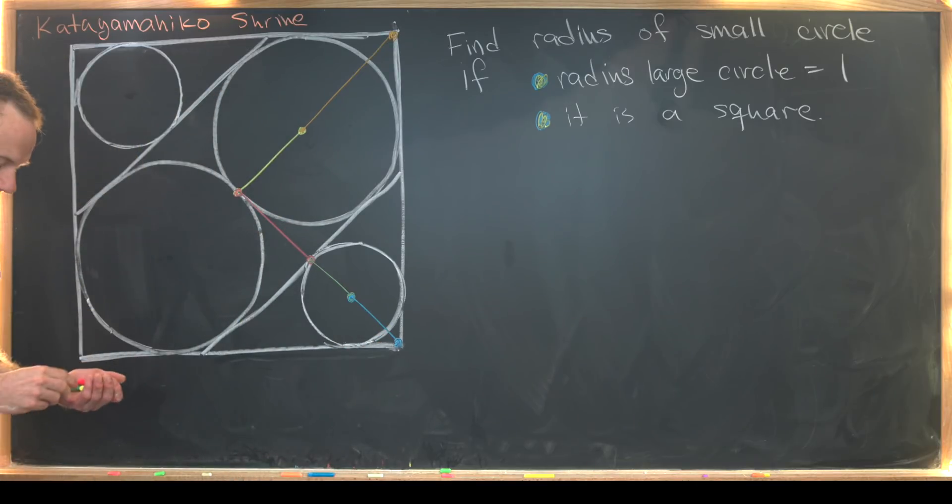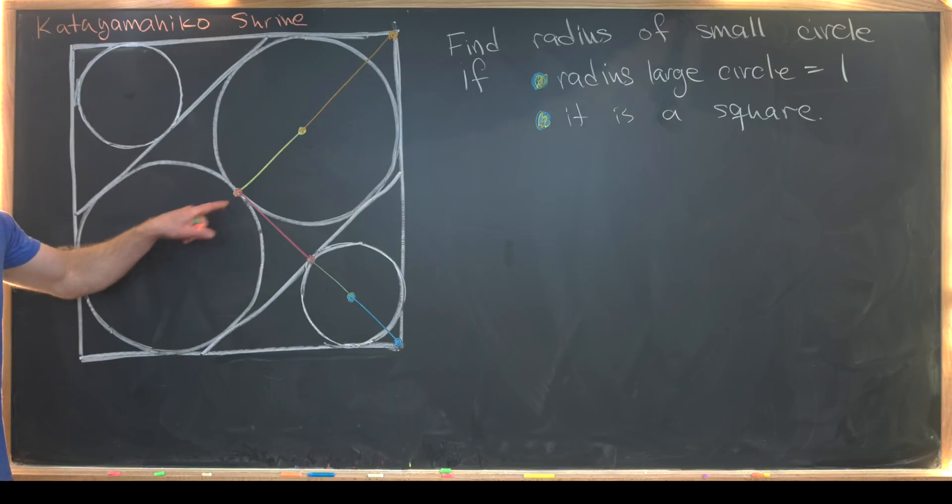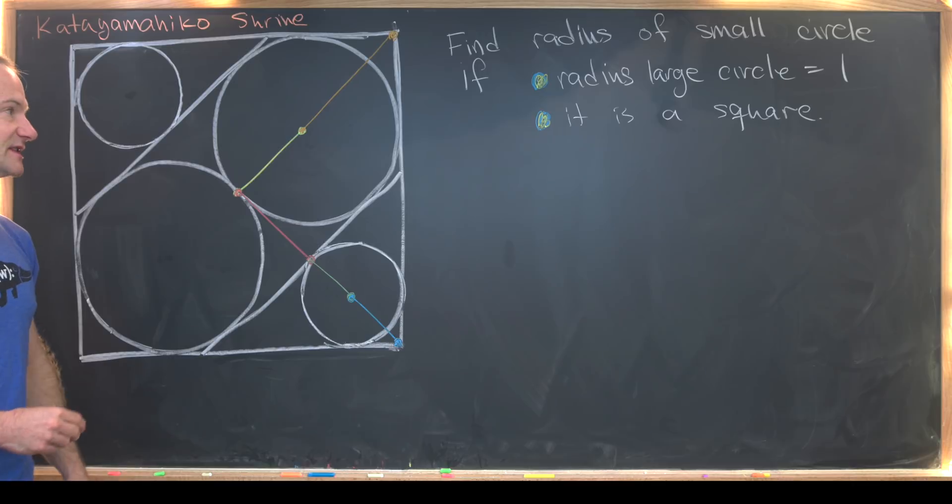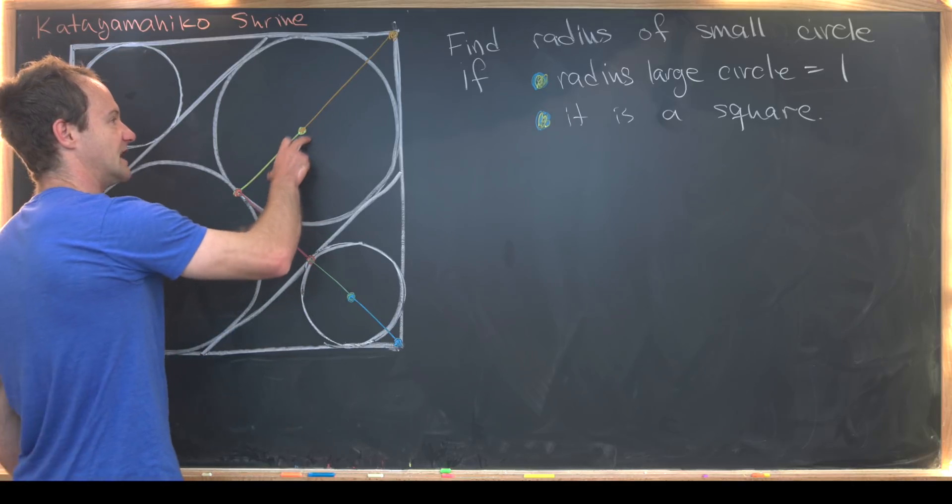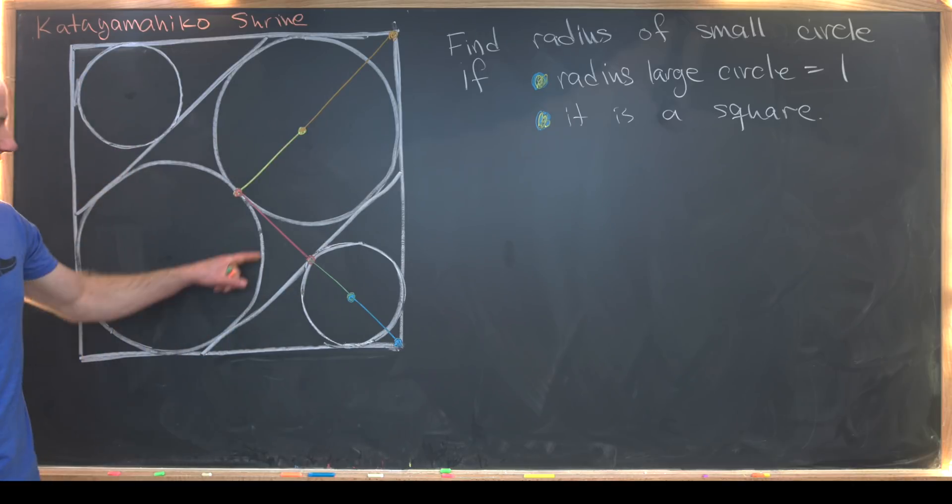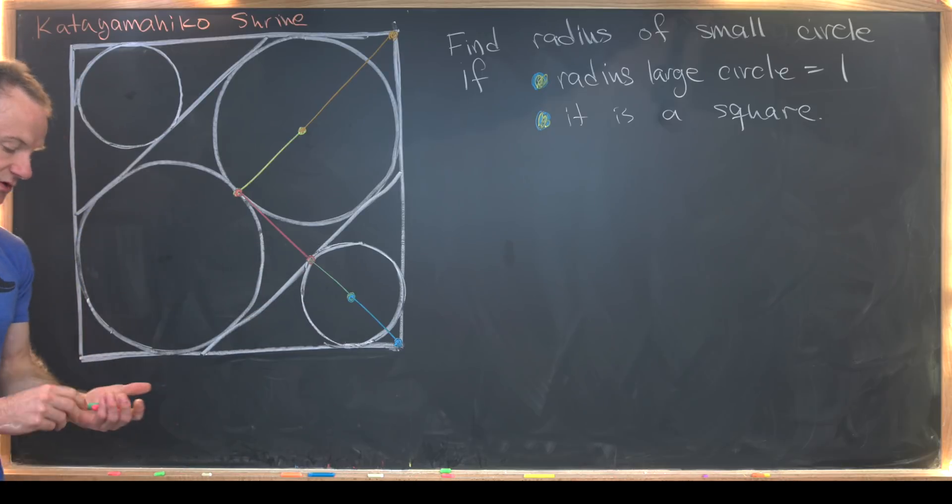Now what I want to notice is that since we're going from the center of the square to a vertex of the square, all of these side lengths will add up to the same thing. So in other words, yellow plus orange will be the same thing as red plus green plus blue.